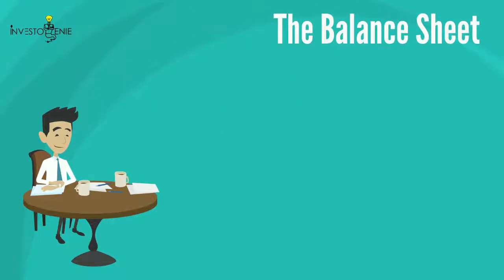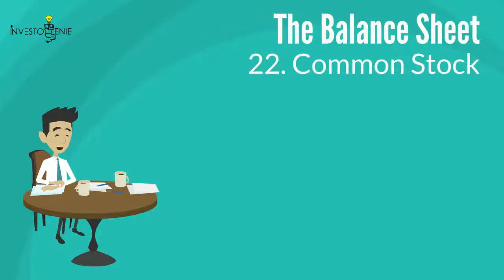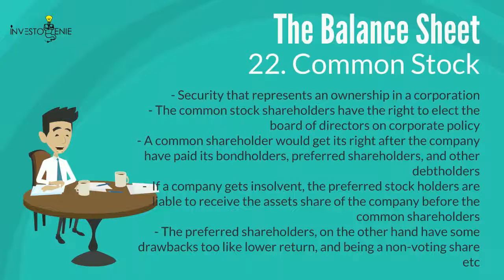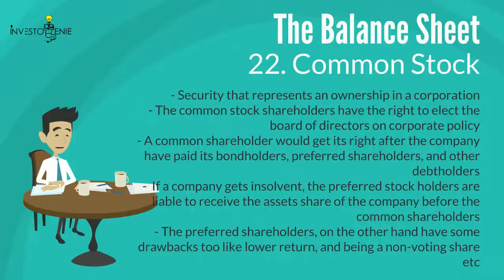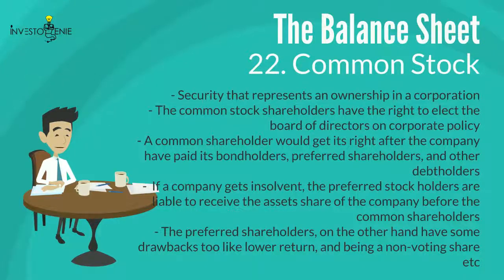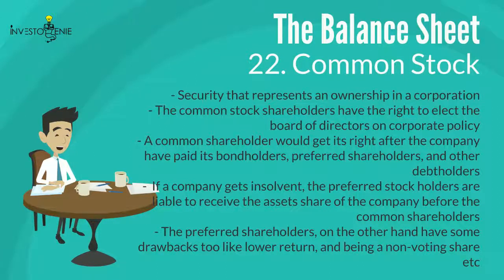Twenty-two: common stock is a security that represents ownership in a corporation. Common stock shareholders have the right to elect the board of directors and influence corporate policy. This holding gives a decent return to the investor. However, a common shareholder receives their share only after the company has paid its bondholders, preferred shareholders, and other debt holders. If a company becomes insolvent, preferred stockholders receive their asset share before common shareholders, though preferred shares have drawbacks like lower returns and being non-voting.